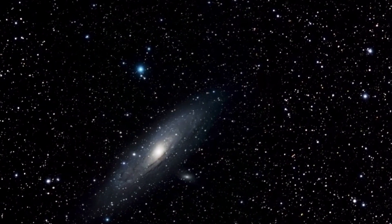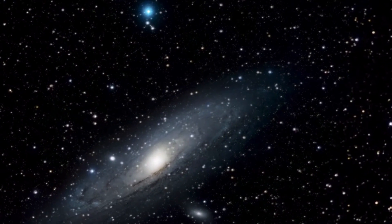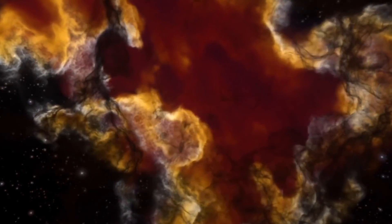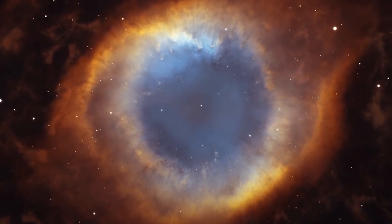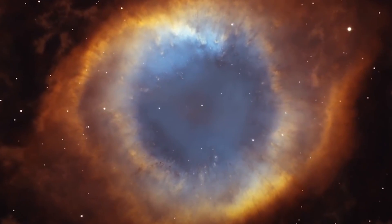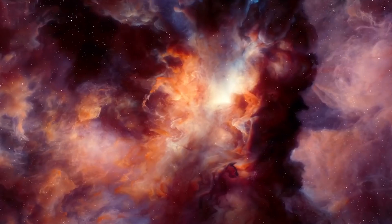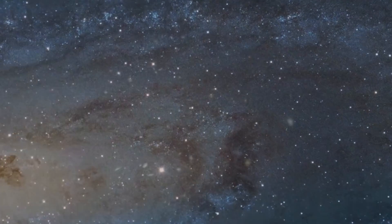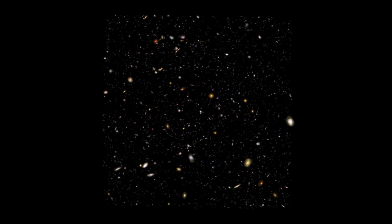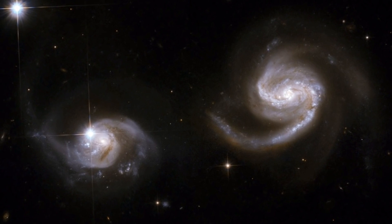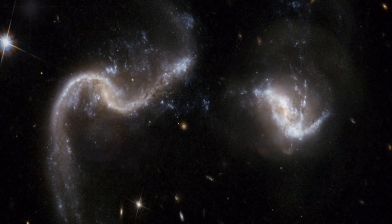A nebula is a giant cloud of dust and gas in space. Some nebulae come from the gas and dust thrown out of the explosion of a dying star, such as a supernova. Other nebulae are regions where new stars are beginning to form. For this reason, some nebulae are called star nurseries.